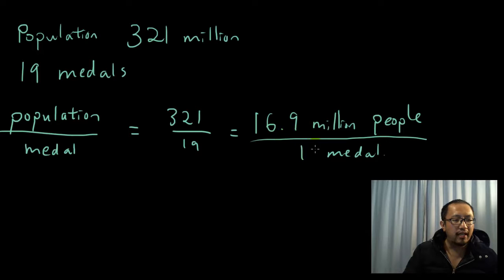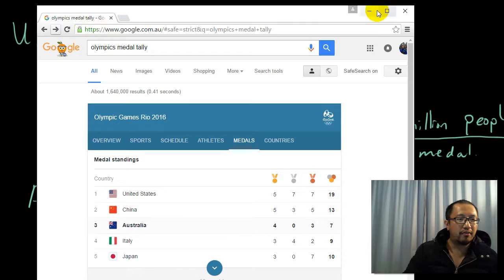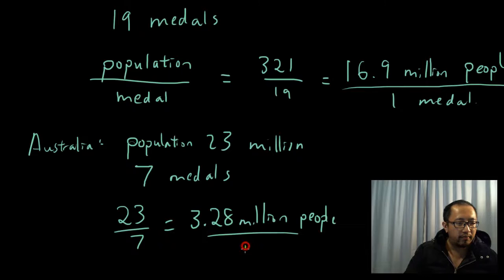Okay, now let's look at Australia. So Australia has a population of 23 million people, and how many medals do we have? We have seven medals. So that means 23 divided by seven is 3.28 million people per medal.